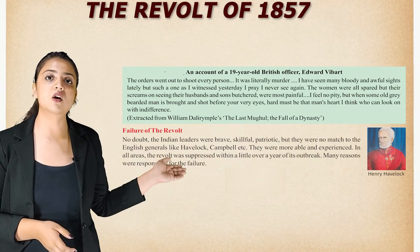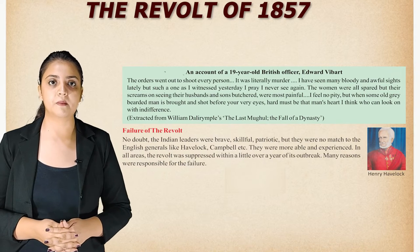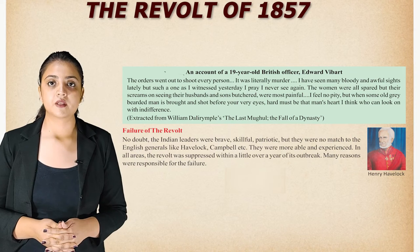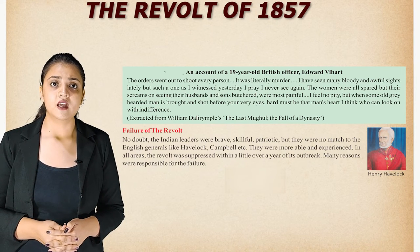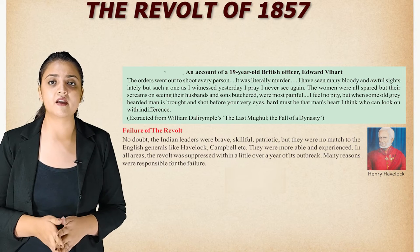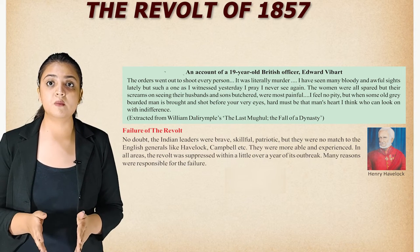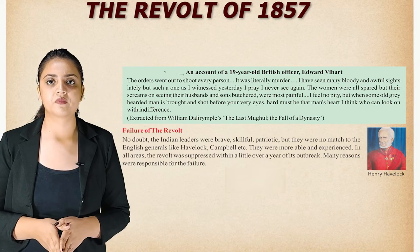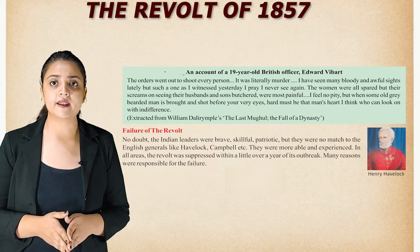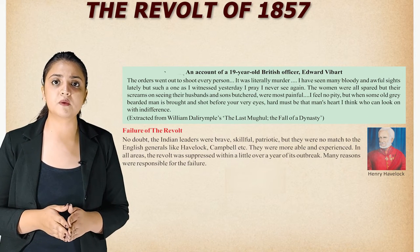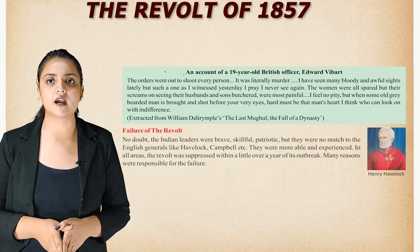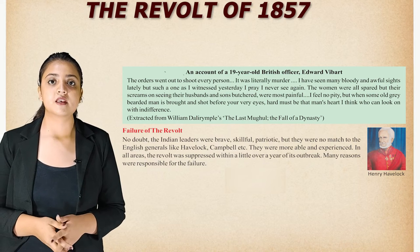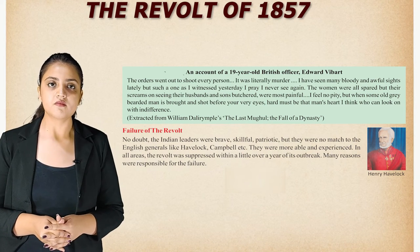An account from 19-year-old British officer Edward Vibart: 'The orders went out to shoot every person. It was literally murder. I have seen many bloody and awful sights lately, but such as one as I witnessed yesterday, I pray I never see again. The women were all spared, but their screams on seeing their husbands and sons butchered were most painful. I feel no pity, but when some old grey-bearded man is brought and shot before your very eyes, hard must be the man's heart who can look on with indifference.' This is extracted from William Dalrymple's The Last Mughal: The Fall of a Dynasty.